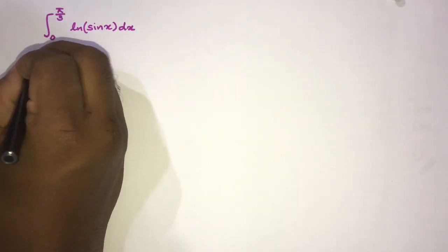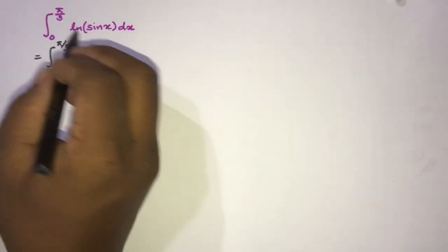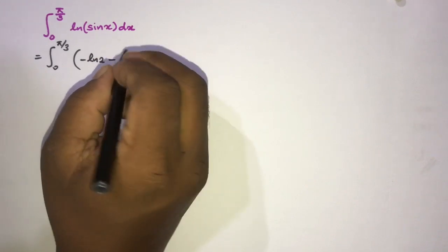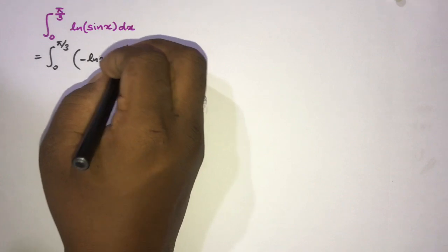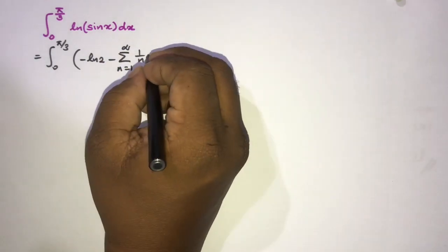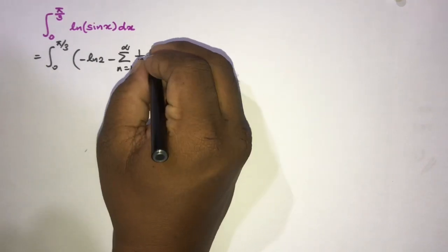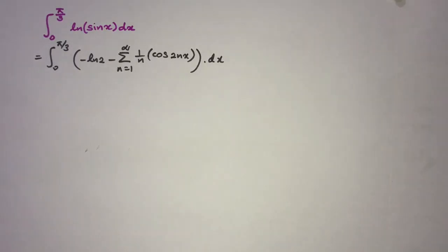For the first method I am going to use the Fourier series. We know the Fourier series of ln(sin x) is equal to minus ln(2) minus the infinite sum from n=1 to infinity of (1/n) times cos(2nx).